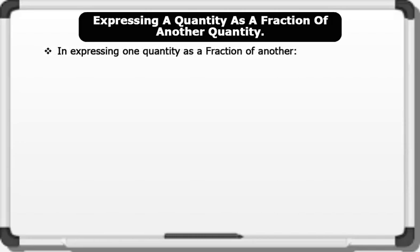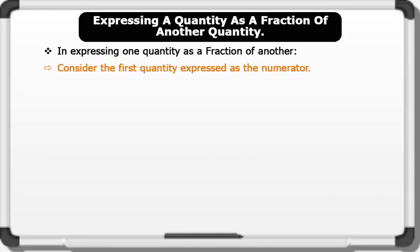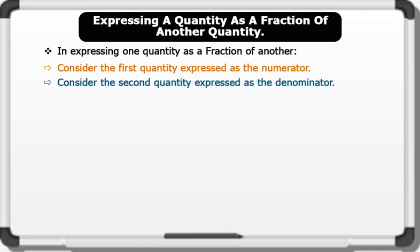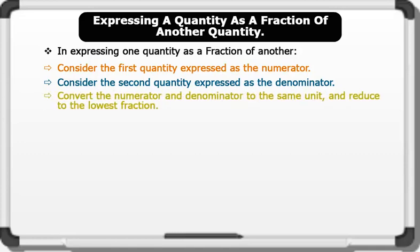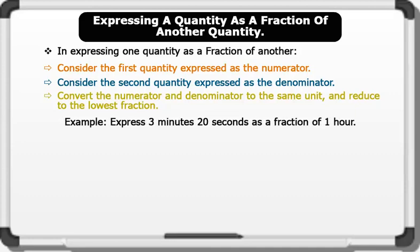Expressing a quantity as a fraction of another quantity. We consider the first quantity as the numerator and the second quantity as the denominator. We convert the numerator and denominator to the same unit and reduce to the lowest fraction. For example: express 3 minutes 20 seconds as a fraction of 1 hour.